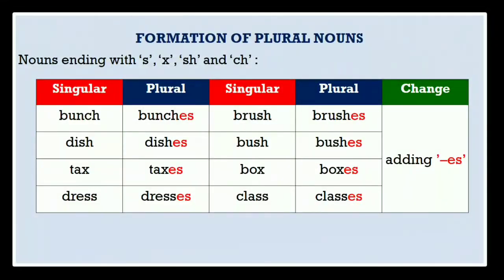Nouns ending with s, x, sh, and ch — let's take examples related to this rule: bunch — bunches, dish — dishes, tax — taxes, dress — dresses, brush — brushes, bush — bushes, box — boxes, class — classes. Here you can see the words are ending with s, x, sh, and ch, and we convert them into plural forms by adding es.